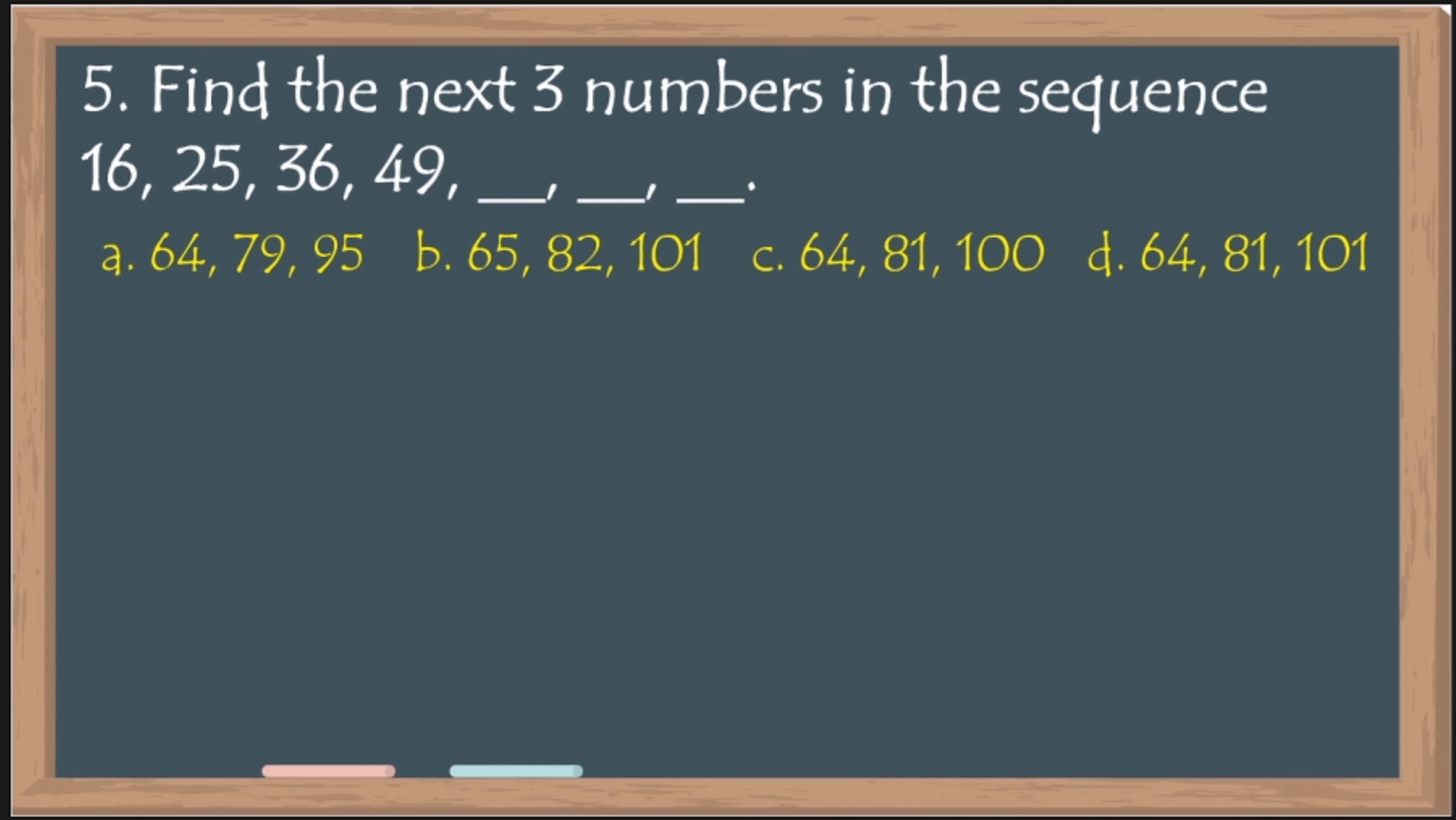Number 5. Find the next 3 numbers in the sequence. 16, 25, 36, 49. So, we have 16. Tapos, meron tayong 25. Ano ang difference ng 16 and 25? It's 9. So, nag-plus 9 siya dito. Ang susunod na number ay 36. So, ang ginawa niya dyan ay nag-plus. Anong pinas niya to get 36? 11. Then, next one is 49. So, ang ginawa, nag-plus siya ng 13. Therefore, kung ito yung ating sequence, yung ating pattern, ano ang susunod natin i-add? That is 15.